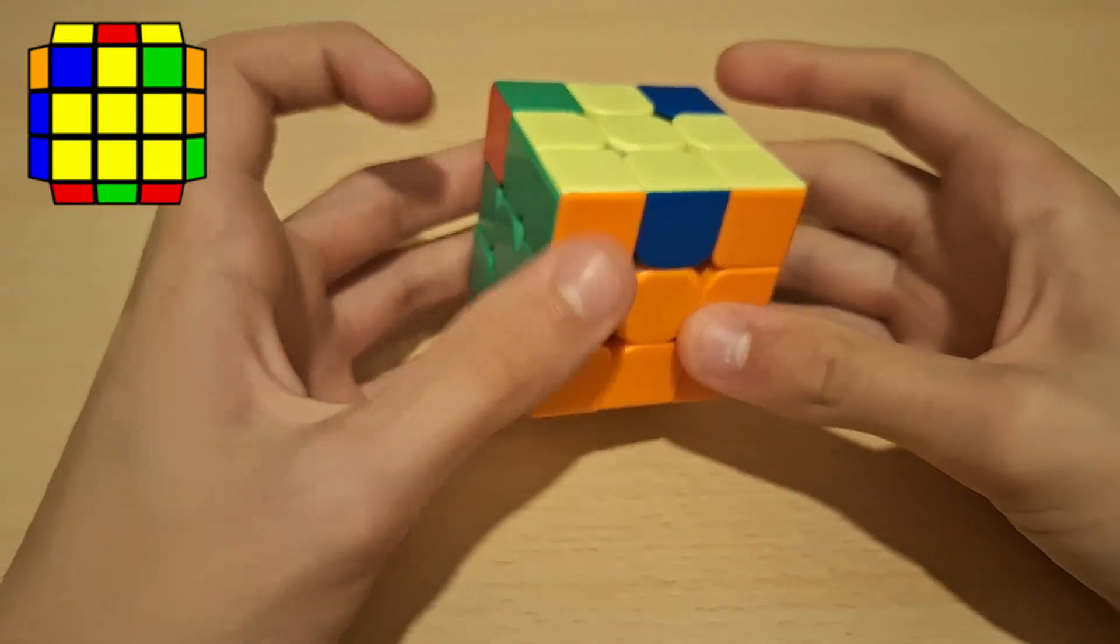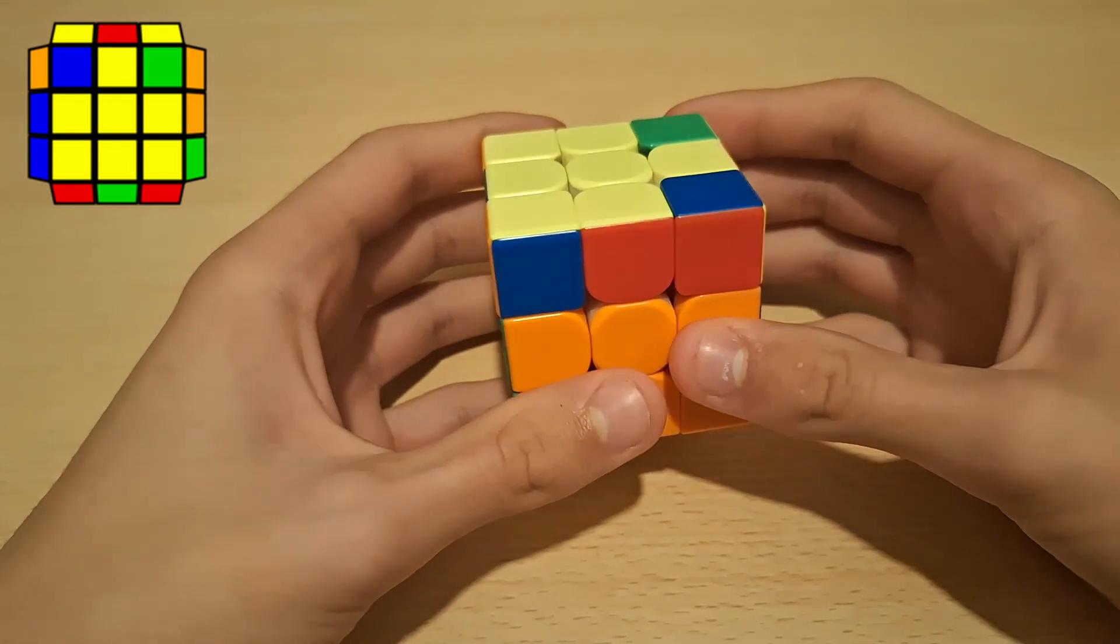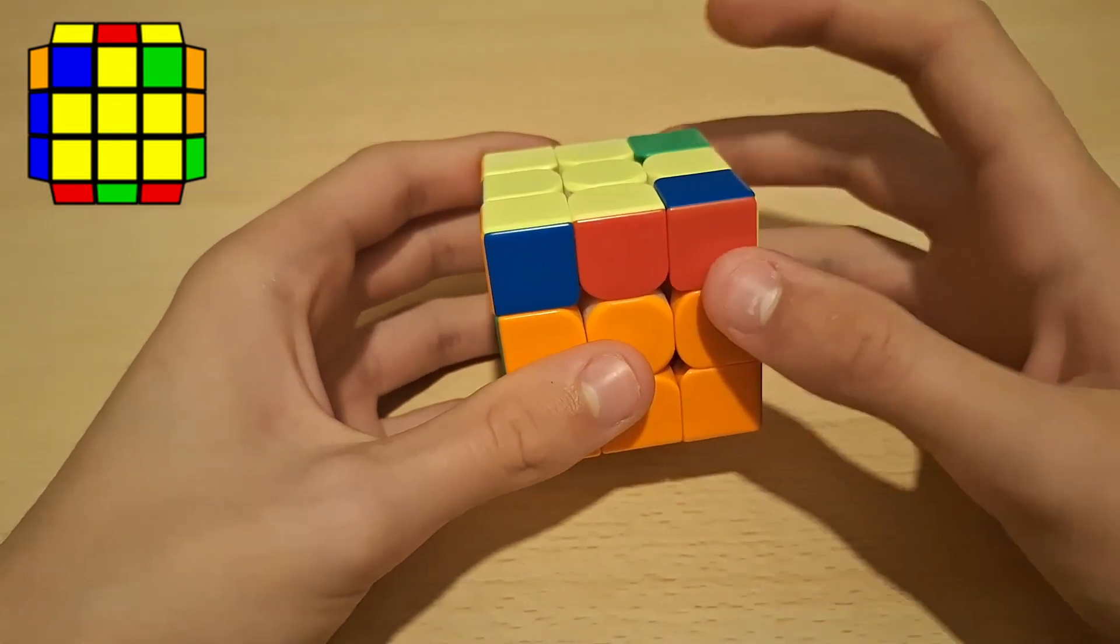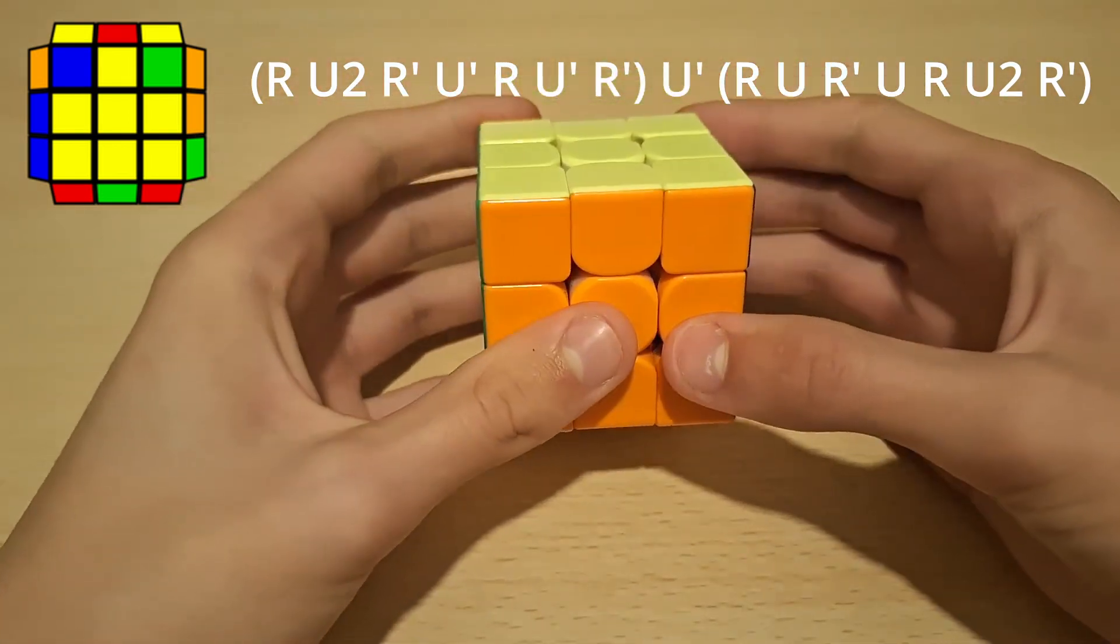Okay now for the next ZBLL. So from this angle this kind of looks like an R-perm again like for the last one. So here from this angle we first of all do an anti-sune and then just solve this sune case.